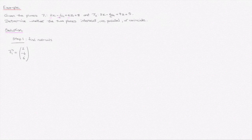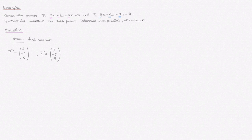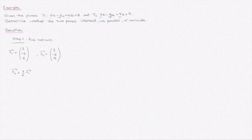Similarly, looking at plane 2, the coefficients are 3, negative 6, and 9. So we define n2 as the vector (3, -6, 9). Looking at these two normals, we can see right away that they are collinear — indeed, n2 equals (3/2) times n1, since 3 = (3/2)·2, -6 = (3/2)·(-4), and 9 = (3/2)·6.